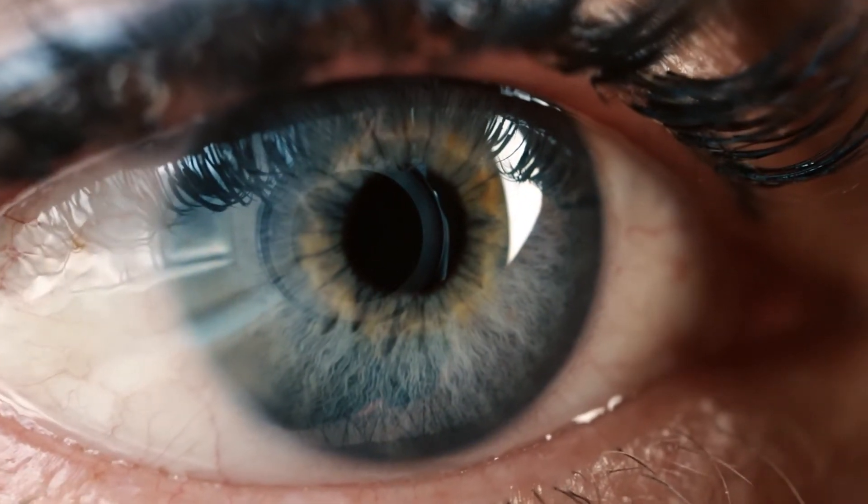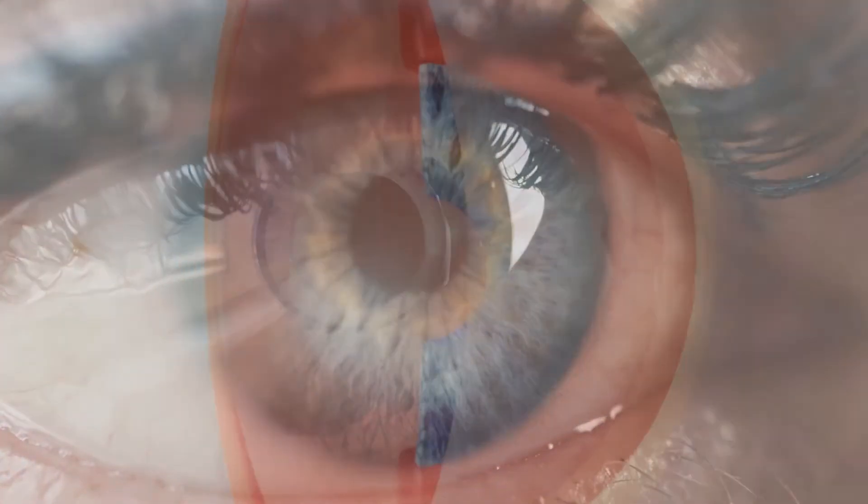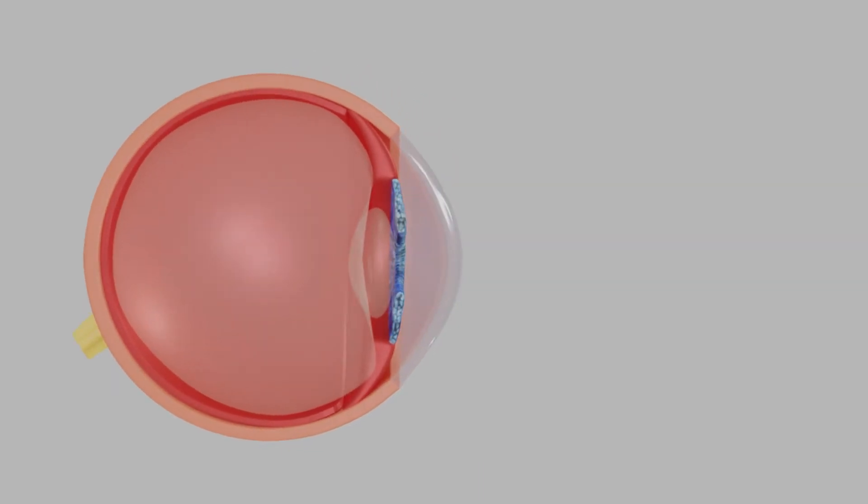We see the world through our eyes, more specifically through our lenses, which change their shape to focus light and allow us to see both near and far.